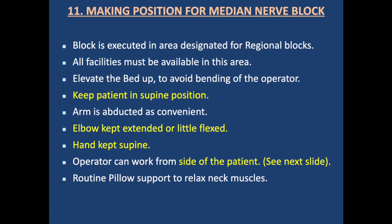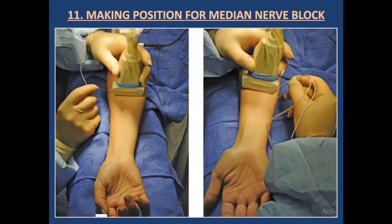The block is executed in an area designated for regional blocks where all facilities must be available. We elevate the table to avoid bending of the operator. The patient is kept in the supine position with the arm abducted as convenient, elbow kept extended and slightly flexed, and the hand kept supine. The operator can work from the side of the patient. This diagram shows the position for successful execution of the median nerve block. Using an in-plane technique, we can approach from the lateral side as well as from the medial side.